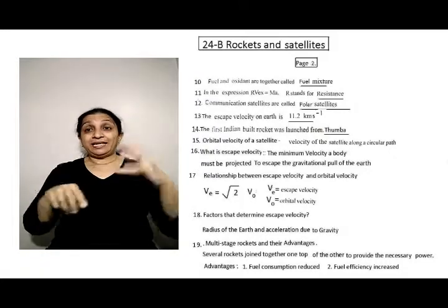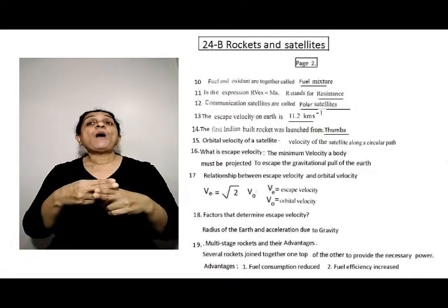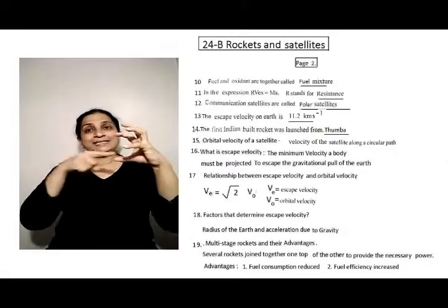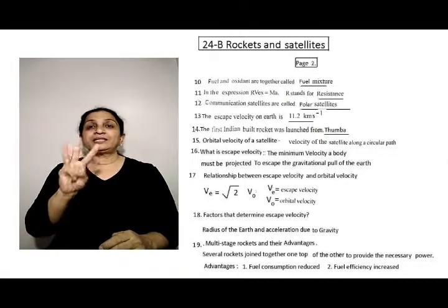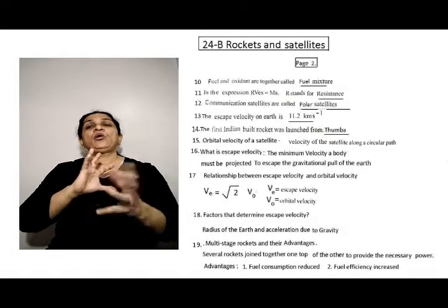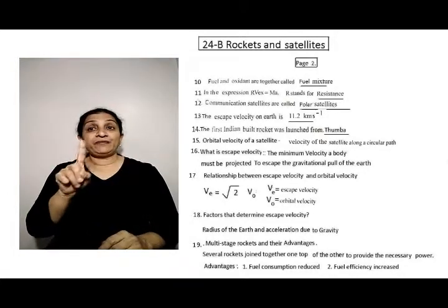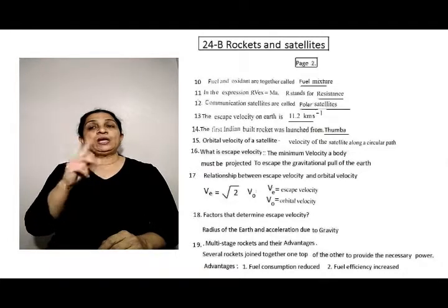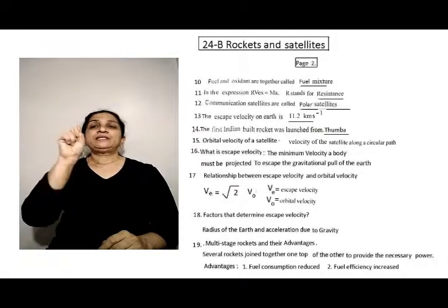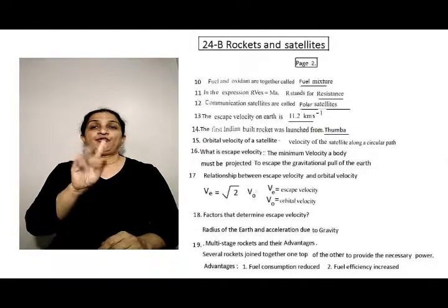Twelve, communication satellites are called polar satellites. Thirteen, the escape velocity on earth is 11.2 km per second.